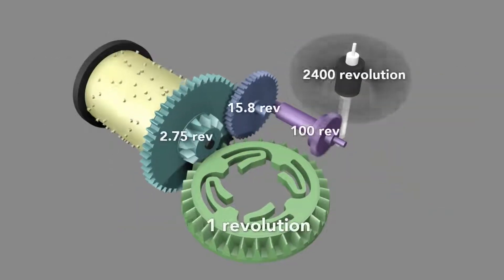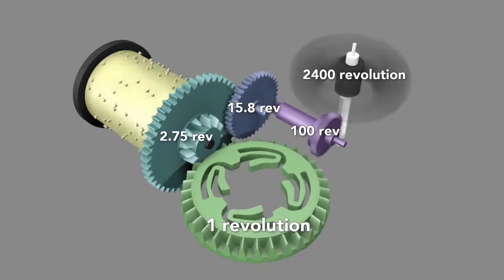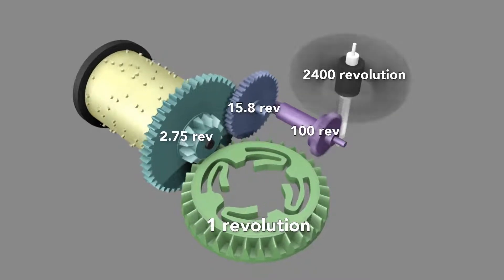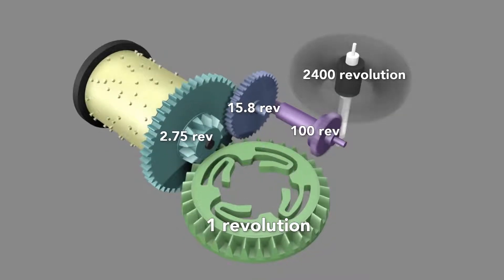This means that for every single revolution of the first bevel gear, the governor rotates 2,400 times. Since the first gear rotates roughly 1.5 times a minute, the governor spins at 3,600 revolutions per minute.